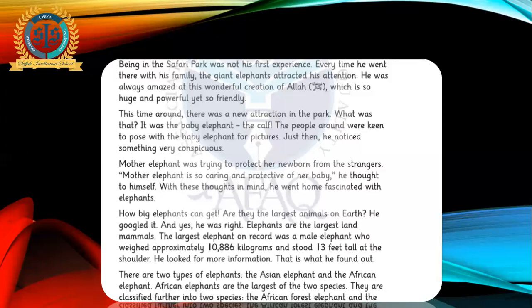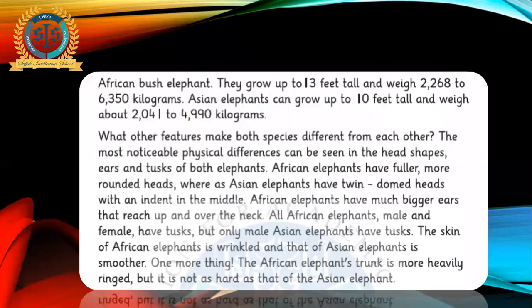There are two types of elephants: the Asian elephant and the African elephant. African elephants are the largest of the two species. They are classified further into two species: the African forest elephant and the African bush elephant. They grow up to 13 feet tall and weigh 2,268 to 6,350 kilograms. Asian elephants can grow up to 10 feet tall and weigh about 2,041 to 4,990 kilograms. What other features make both species different from each other? The most noticeable physical differences can be seen in the head shapes, ears and tusks of both elephants.